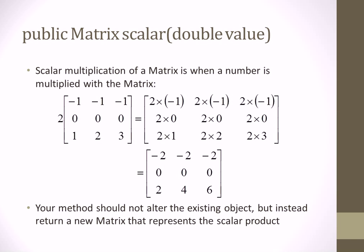This is called immutable — when an object is never changed. Just like the String class: if you ask for a substring, it doesn't cut the original down, it gives you a new string back. This Matrix class will be immutable — no methods alter it once created. You can always guarantee the existing matrix is unchanged, and you return a new one instead. We'll talk about this concept more later in the course.